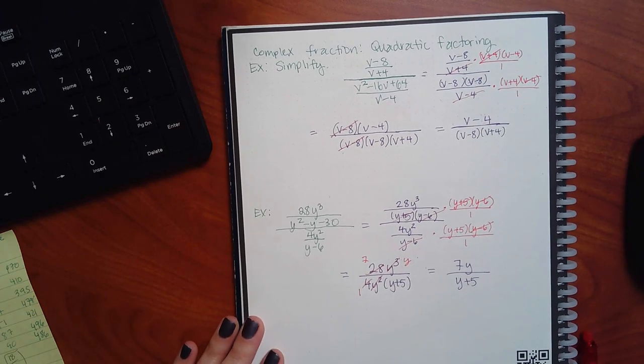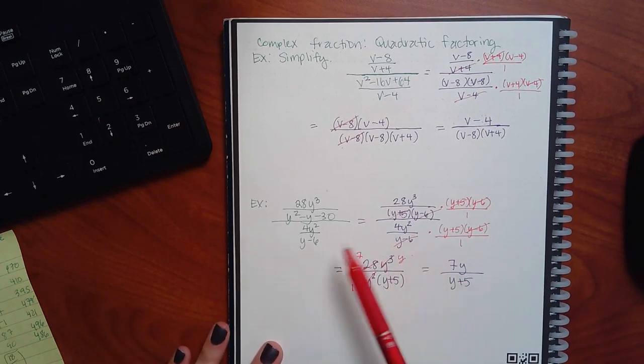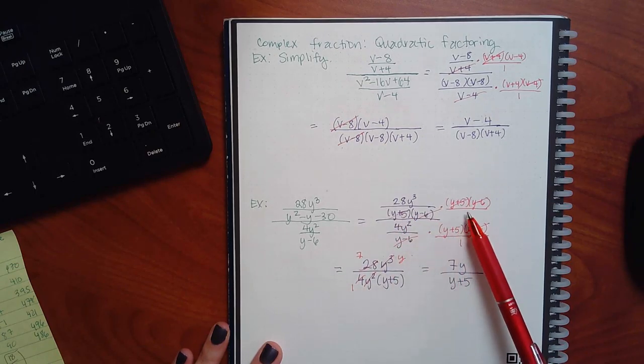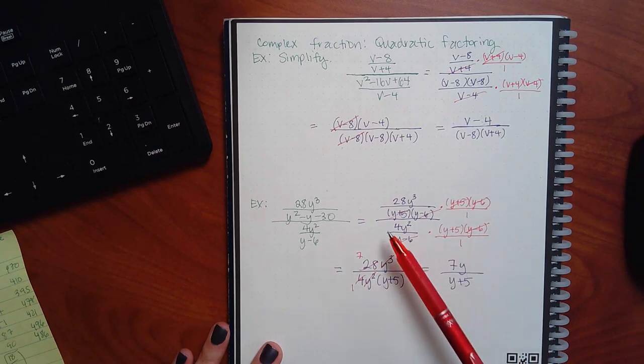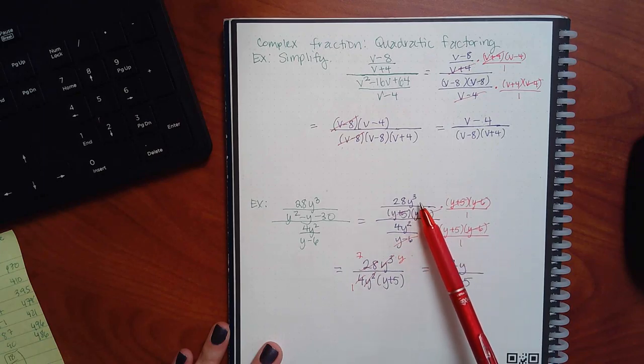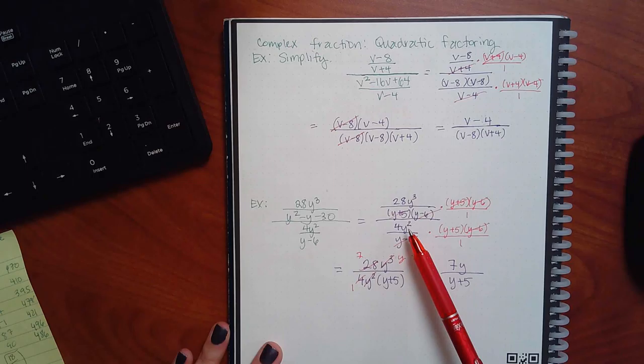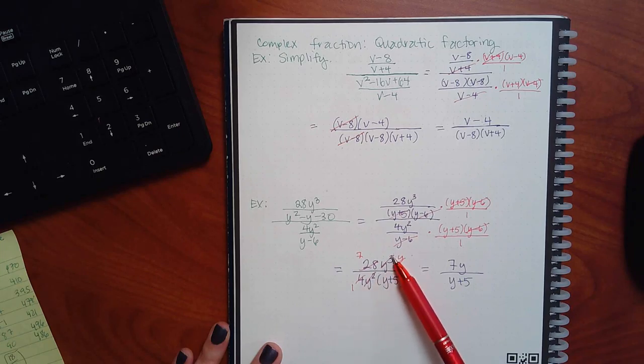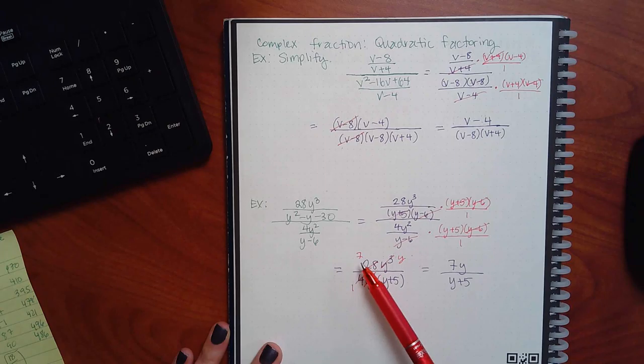Let me just reword this one real quick because I pressed stop instead of play. So we factored this denominator and then we noticed they had this factor in common and this one's different. So that's the LCD over 1, LCD over 1. Both factors cancel here. Y minus 6 cancels here. So we're left with 28y cubed in purple there, and then 4y squared times y plus 5 in purple here.